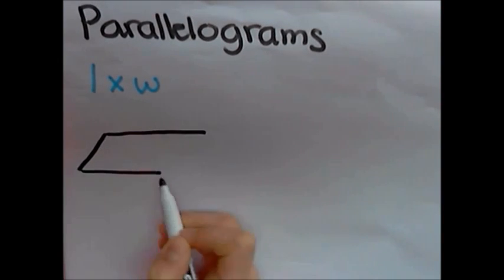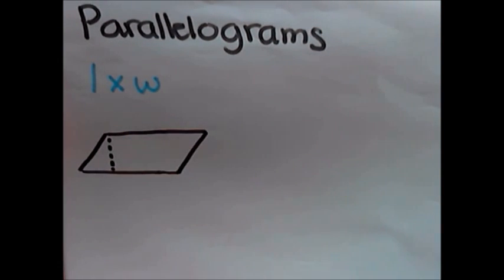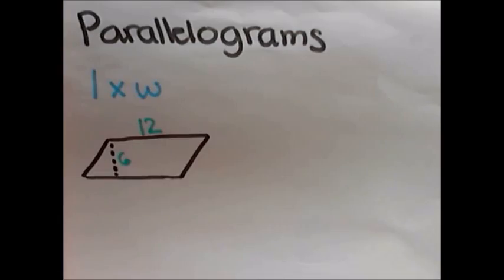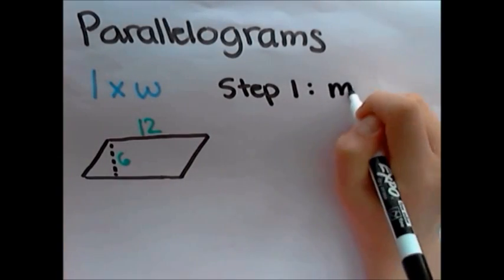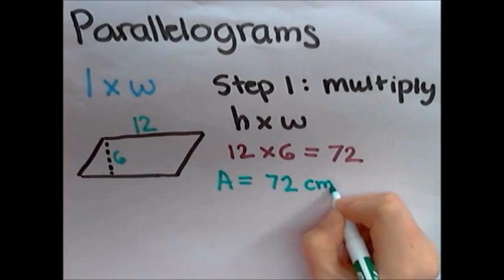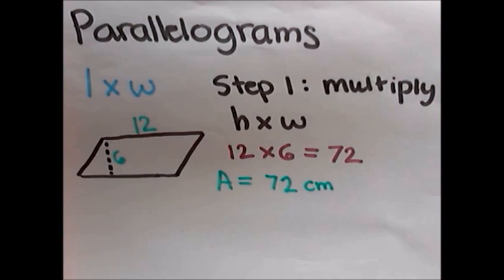For this example, I have a parallelogram with a width of 12 and a height of 6. As I already said, to solve this, multiply the height by width. In this case, just multiply 12 by 6. The area of this parallelogram is 72. And don't forget a measurement.